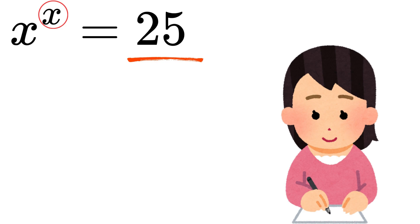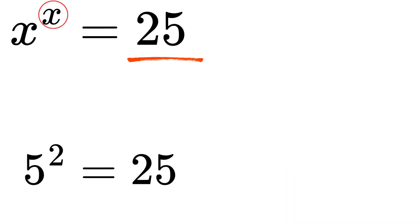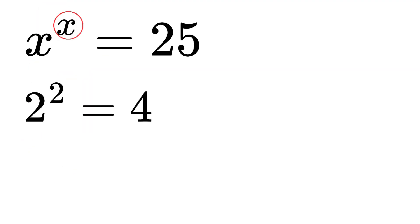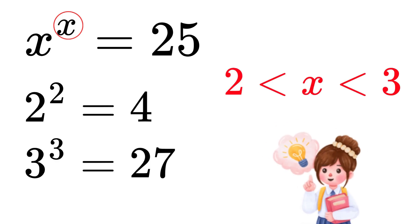Let's test some small numbers. 5 squared equals 25, but notice this is not the same form as x raised to the power of x. For example, 2 squared equals 4, and 3 cubed equals 27. So clearly, our solution x must be between 2 and 3. That's our starting point.